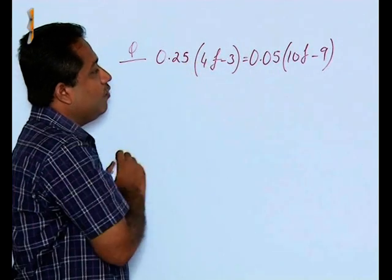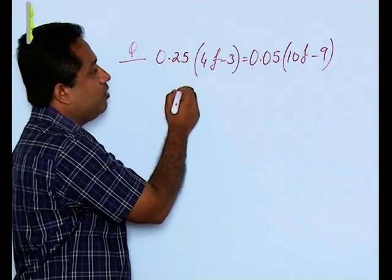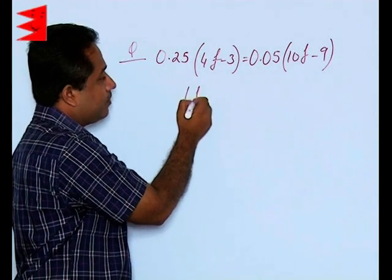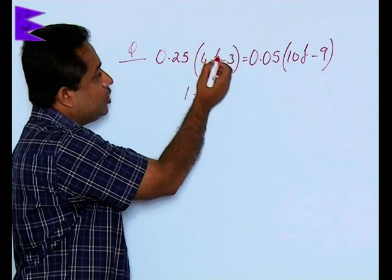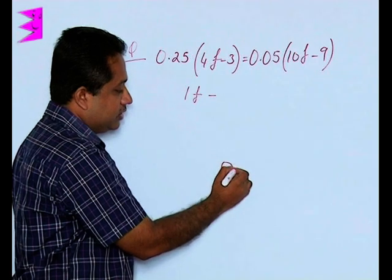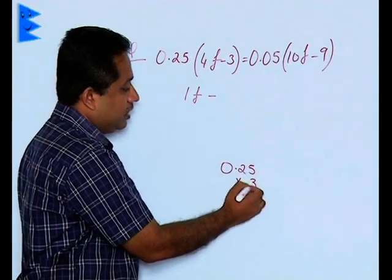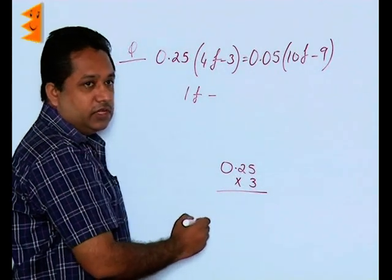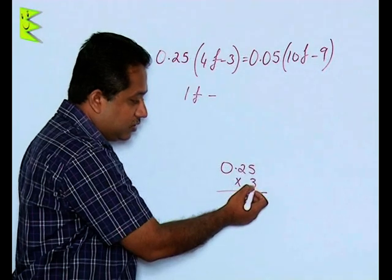0.25 into 4: if we multiply 0.25 with 4, you get 1F. Minus - you are going to multiply 0.25 with minus 3. If you multiply this, we get 0.25 into 3, and we know that 25 into 3 is 75, but you have to be careful of the decimal here.